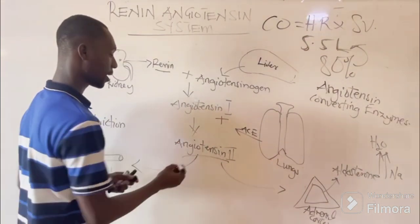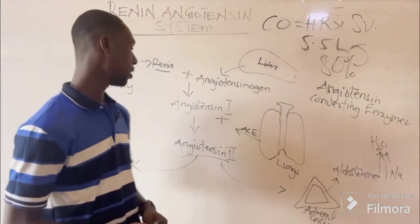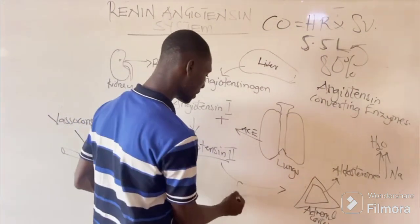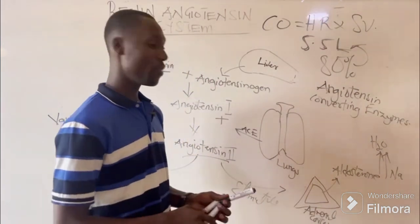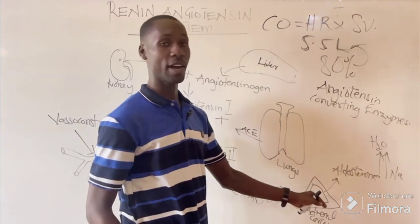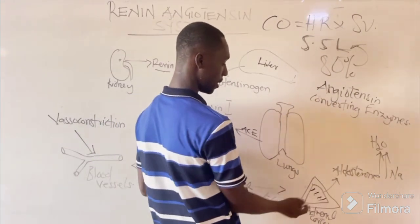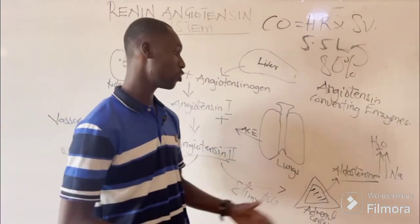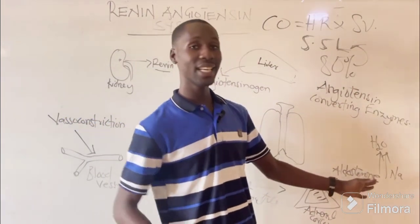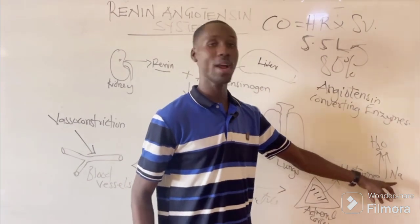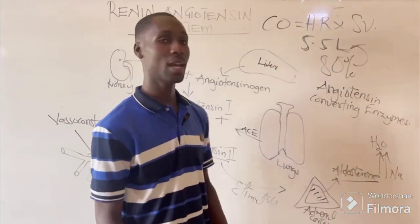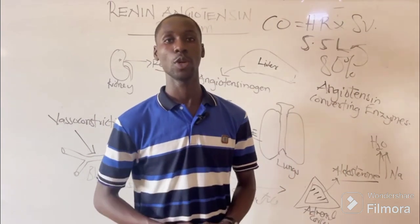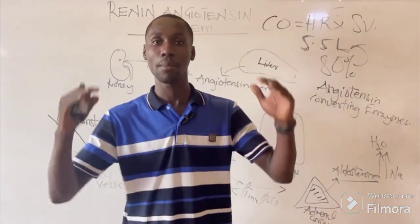When it gets to angiotensin 2, there are two pathways. The first pathway is that angiotensin 2 would stimulate the adrenal cortex of the adrenal gland, so that the adrenal cortex would release aldosterone. The main function of aldosterone is to increase the reabsorption of sodium, and with increased sodium reabsorption, there is a subsequent increase in water, which increases blood volume and helps elevate or maintain normal blood pressure.